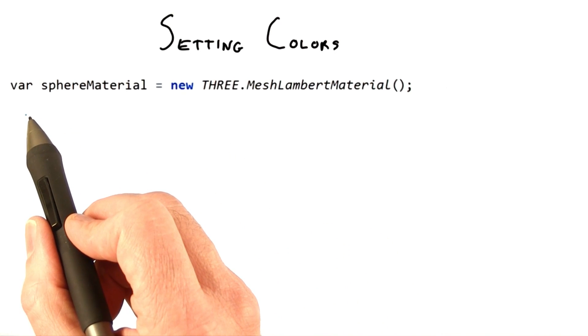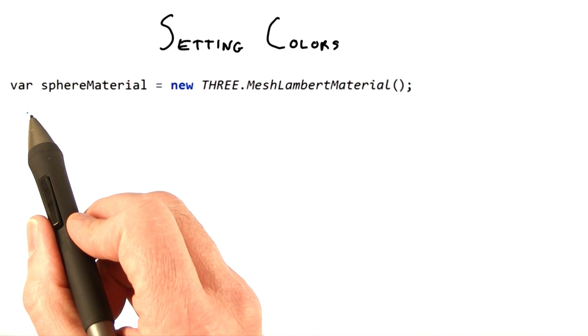In 3.js, there are a number of ways to set a color. See the additional course materials for a link to the documentation. We'll cover four of them here.